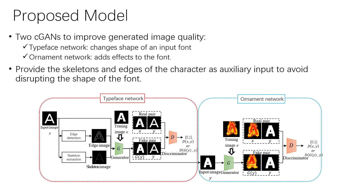So we divide this task into two CGANs to improve generated image quality. We use the first CGAN named Typeface Network to change the shape of an input font, and the second CGAN named Ornament Network to add effects to the font. Besides, because the shape of the font carries a specific meaning, we provide the skeleton and edges of the character as auxiliary input into the Typeface Network in order to avoid disrupting the shape of the font.